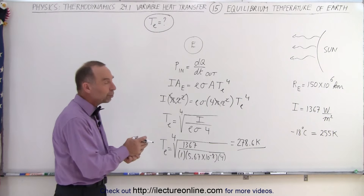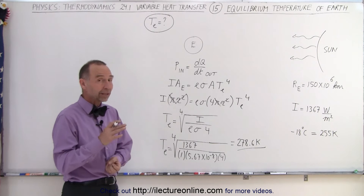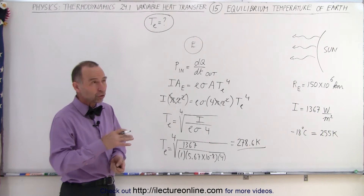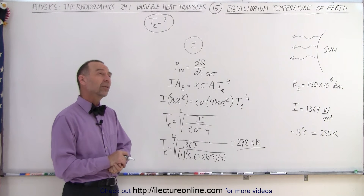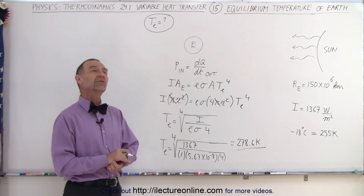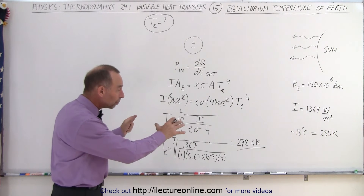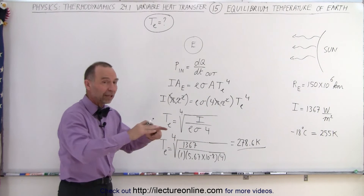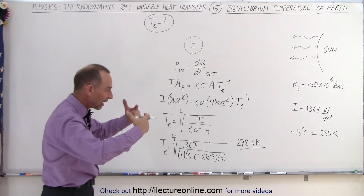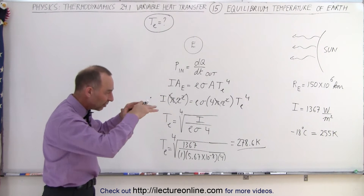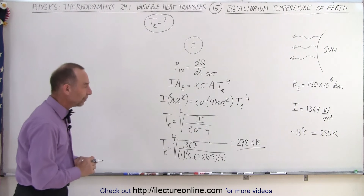So 278.6 kelvin is about 5 degrees above zero degrees centigrade, meaning the average temperature would be about 5 degrees centigrade. In actuality, the Earth's average temperature is closer to about 15 degrees centigrade, which is warmer — that's because the Earth's atmosphere retains some of the heat that would otherwise escape back into space.